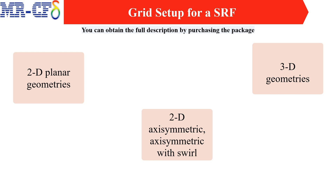It is important to remember the following coordinate system rules when setting up a problem involving a rotating reference frame. For 2D planar geometries, rotation is about an axis normal to the XY plane with a specified origin, and periodic boundaries are permitted. For 2D axisymmetric geometries, rotation is about the X axis. For 3D geometries, you define both the rotational axis origin and direction for the fluid domain; rotationally periodic boundaries permit a smaller computational domain. Fluent can accommodate arbitrary rotational axes.